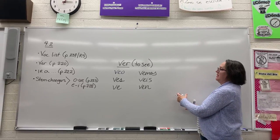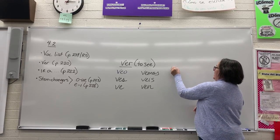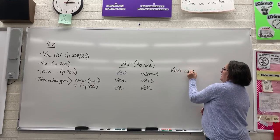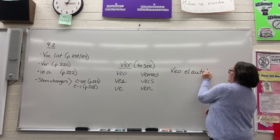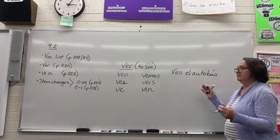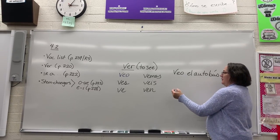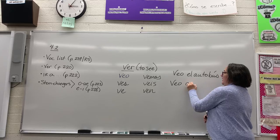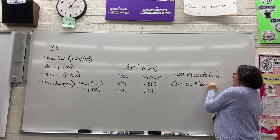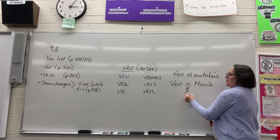Now when you talk about using ver, you're going to use ver to talk about either things or people that you see. For example, I could say veo el autobus, I see the bus, but if I see my friend, veo a Maria.